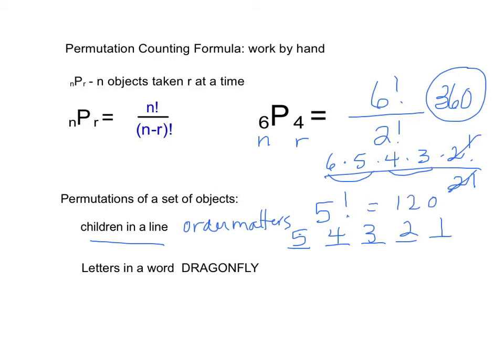The letters in the word dragonfly, you would count the number of letters. One, two, three, four, five, six, seven, eight, nine letters. So I would have nine factorial over the number of repeats. So there's one D, one R, one A, one G, one O, one N, one F, one L, one Y. So they're all different ones. So this would be dividing by the number of letters that repeat. They're all ones. So this would just be nine factorial.